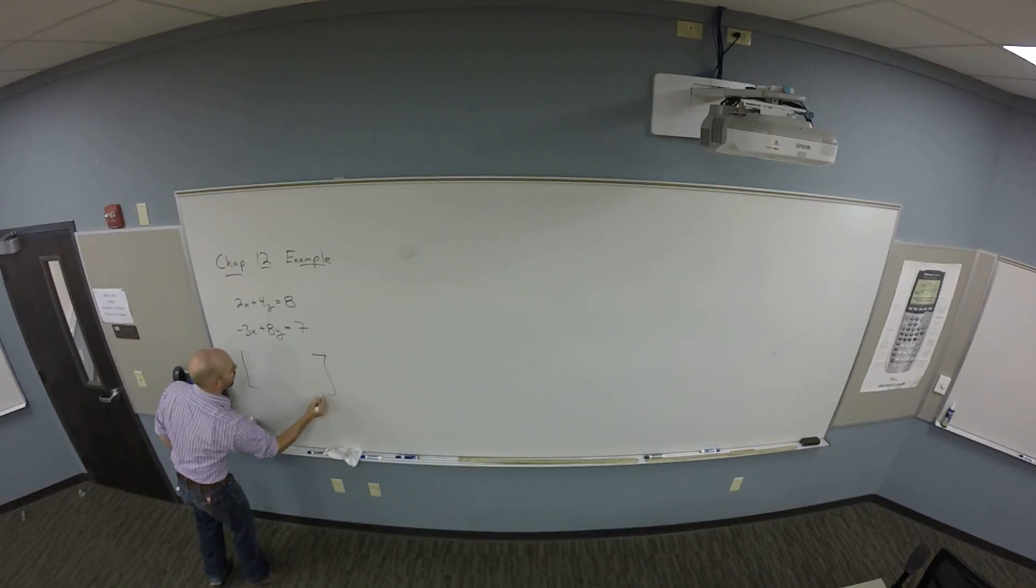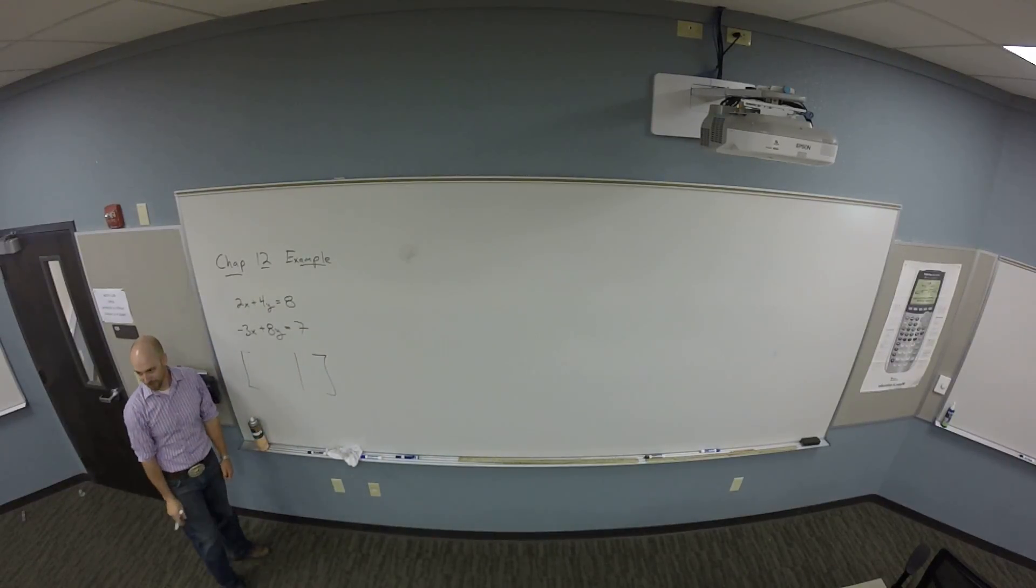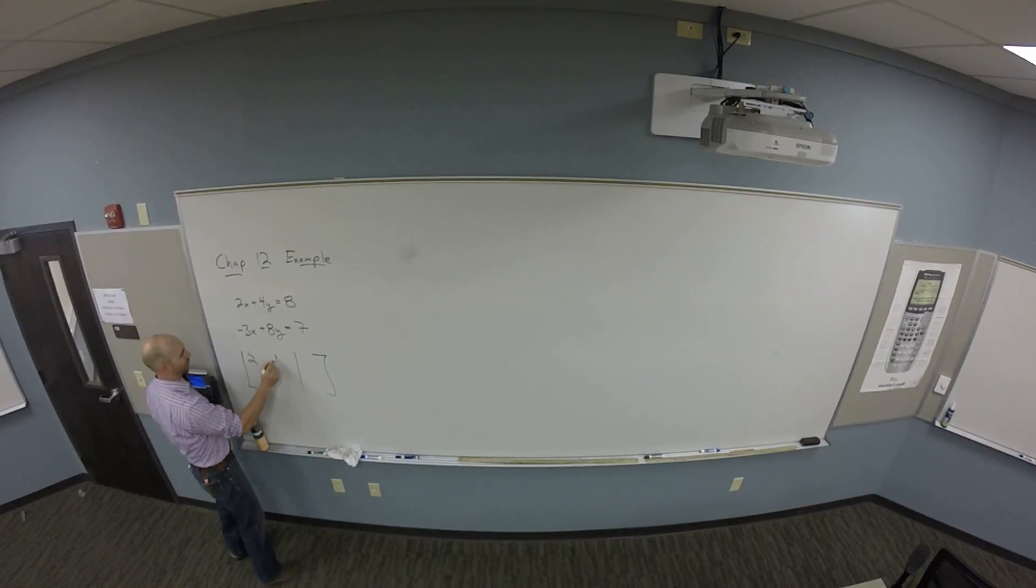This maybe is the step that we can do for sure, right? 2, 4, 8, negative 3, 8, 7. Okay, so you guys are looking at this and thinking x's, y's, and numbers. And maybe equals on this thing.